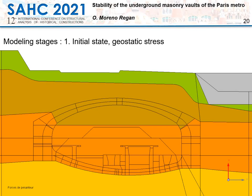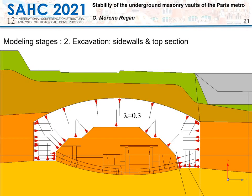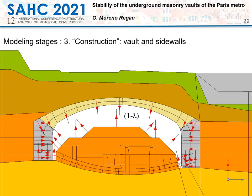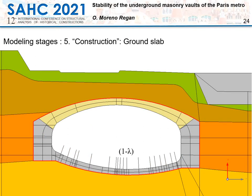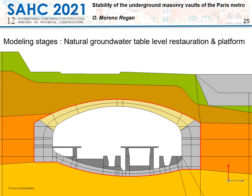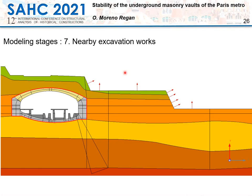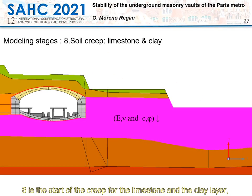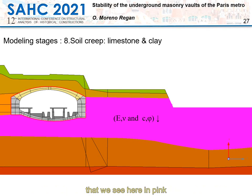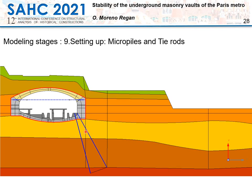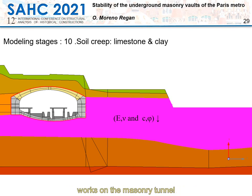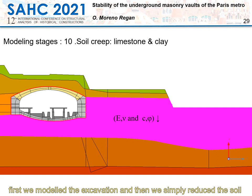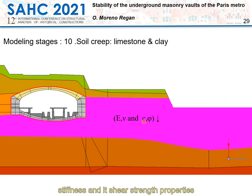The modeling stages are as follows: (1) geostatic stress; (2) excavation of the top section cycles; (3) construction of the vault and sidewalls; (4) excavation of the core and bottom; (5) construction of the ground slab; (6) construction of the platform; (7) nearby excavation works; (8) start of creep for the limestone and clay layer; (9) setup of the micropiles and tie rods; and (10) soil creep in the limestone and clay layer.